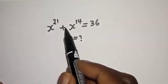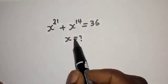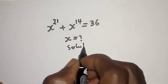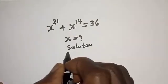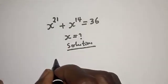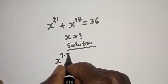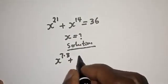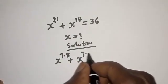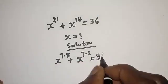How to solve x raised to power 21 plus x raised to power 14 is equal to 36. x raised to power 21 can be written as x raised to power 7 multiplied by 3, plus x raised to power 14 can be written as x raised to power 7 multiplied by 2, is equal to 36.